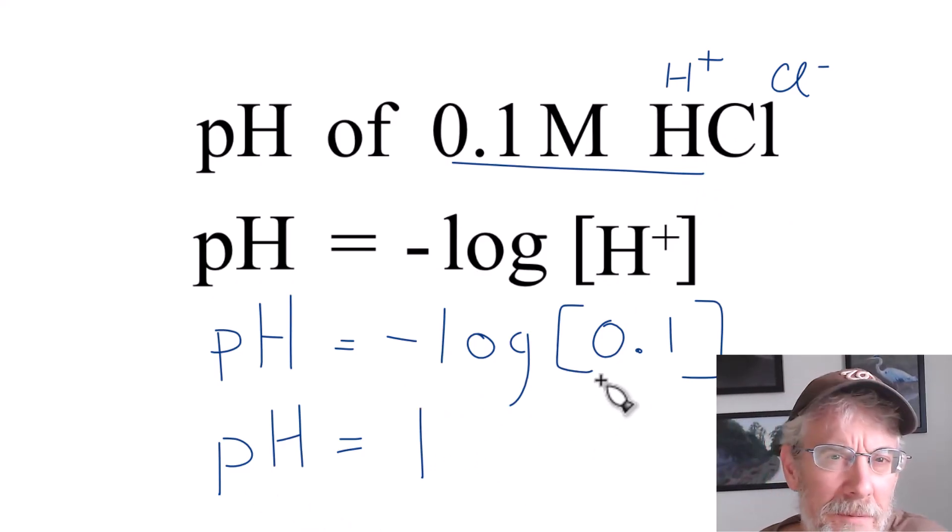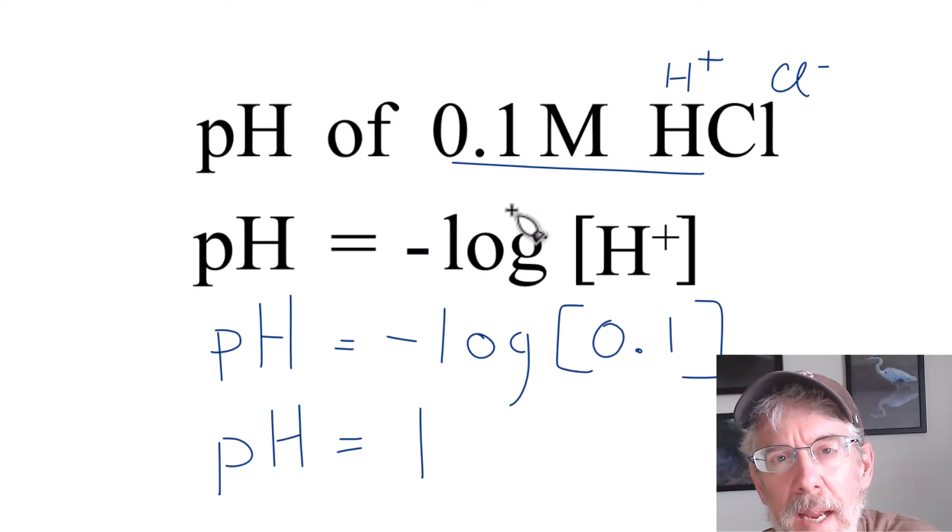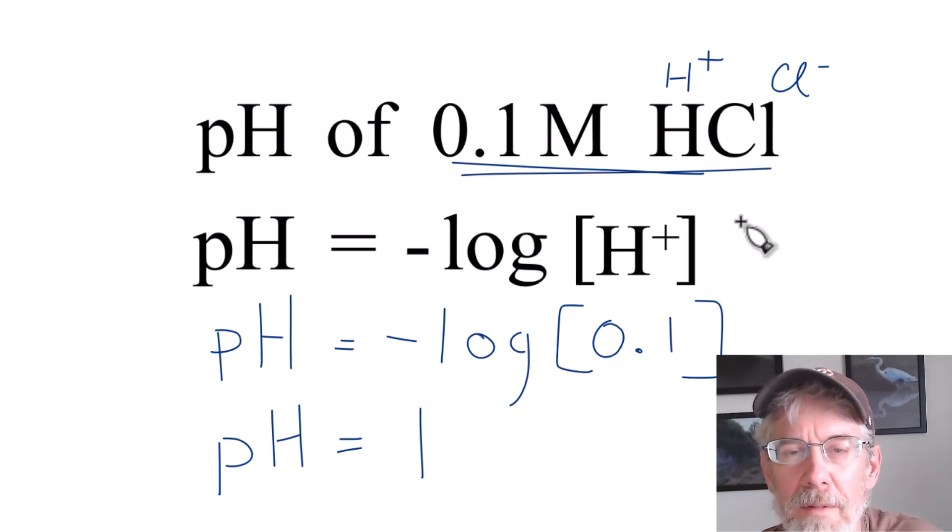This is Dr. B, figuring out how to find the pH for a 0.1 molar solution of HCl. The answer is 1.